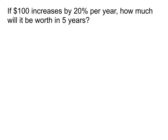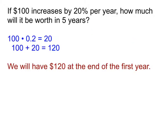I want to figure out: if I go up by 20%, how much will I have? I start with my 100 again and figure out what 20% of that is. We multiply it by 0.2, because we're taking our percent and writing it as a decimal first. So 20% divided by 100, or moving the decimal over two places, gives 0.2. I do 100 times 0.2, that tells me what the 20% is, and I add it to the original amount. So at the end of the first year, I have $120.